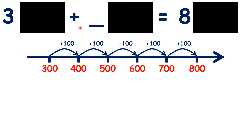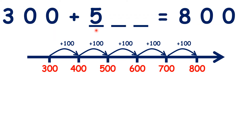Missing number problems with multiples of 100 are really just as easy as our usual missing number problems. So if we ignore our tens and units, we have 3 plus something equals 8. You probably know that 3 plus 5 equals 8. But we can't just write 5, because 300 plus 5 is 305, not 800.